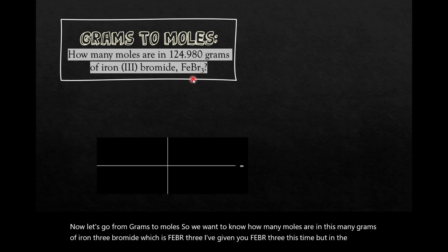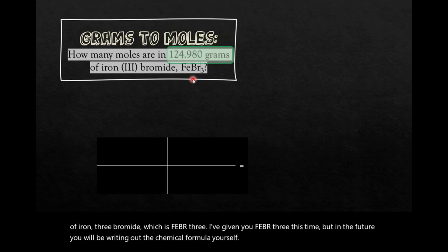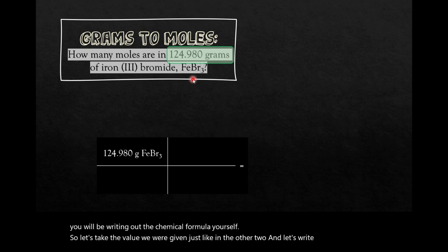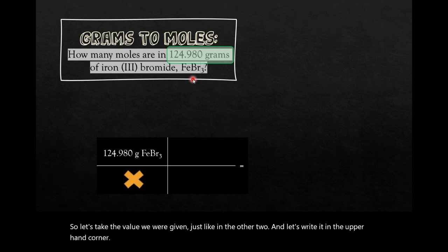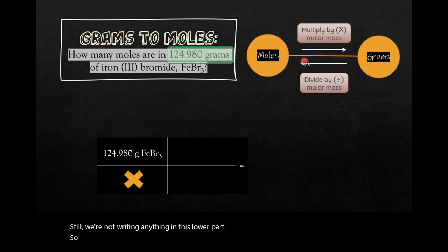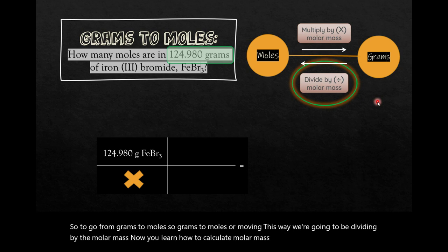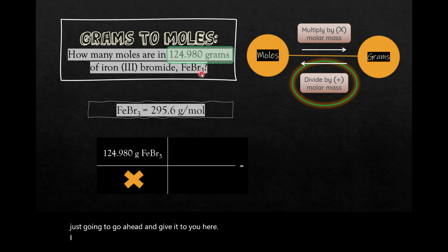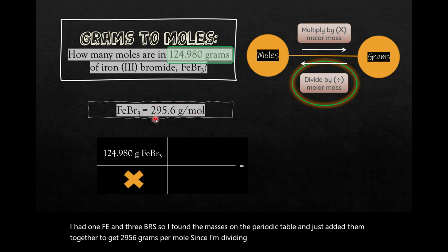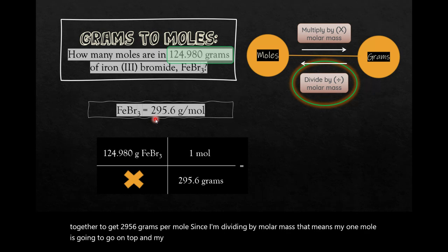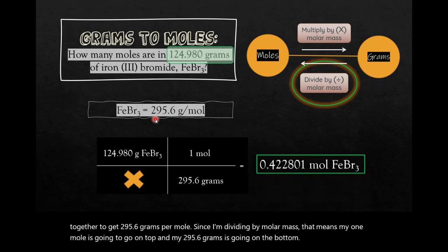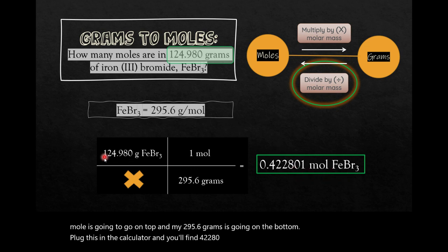So let's take the value we were given, just like in the other two, and let's write it in the upper left-hand corner. Still, we are not writing anything in this lower part. So to go from grams to moles, so grams to moles, so we're moving this way, we're going to be dividing by the molar mass. Now you learned how to calculate molar mass in another video, so I'm just going to go ahead and give it to you here. I had one Fe and three Brs, so I found the masses on the periodic table and just added them together to get 295.6 grams per mole. Since I'm dividing by molar mass, that means my one mole is going to go on top, and my 295.6 grams is going on the bottom. Plug this in the calculator, and you'll find 0.422801 moles of FeBr3 in this many grams.